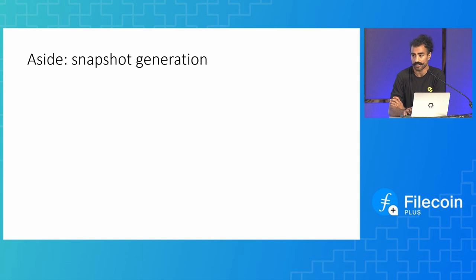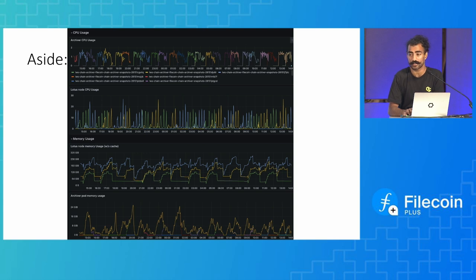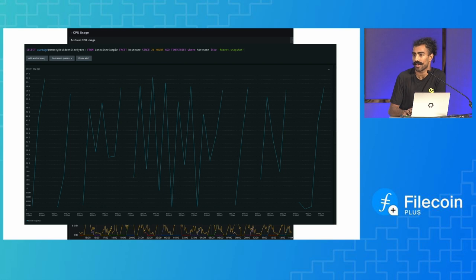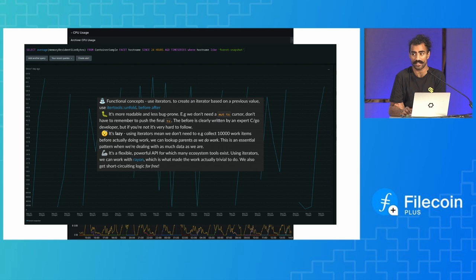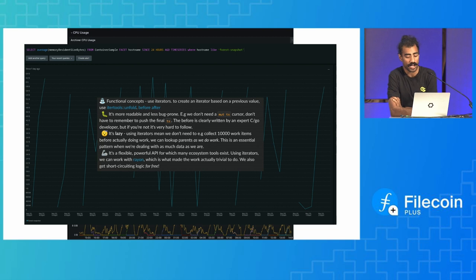Let's talk about how we generate those snapshots. Lotus currently takes almost 200 gigabytes to generate a snapshot — these are huge machines. Whereas Forest takes about 10 gigabytes. This is because when re-implementing snapshot generation we did things a little differently: we were lazy a lot of the time, only allocating data when we absolutely needed to.